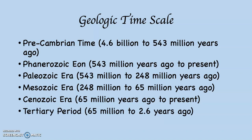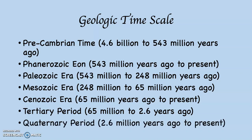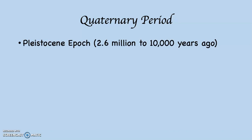The Cenozoic Era is broken into two periods: the Tertiary Period, which goes from 65 million years ago to 2.6 million years ago, and the Quaternary Period, which goes from 2.6 million years ago until now. So we are in the Quaternary Period, which is broken into two epochs. The Pleistocene Epoch goes from 2.6 million years ago to 10,000 years ago. This is what most people refer to as the Ice Age, although there will be more detail on this.